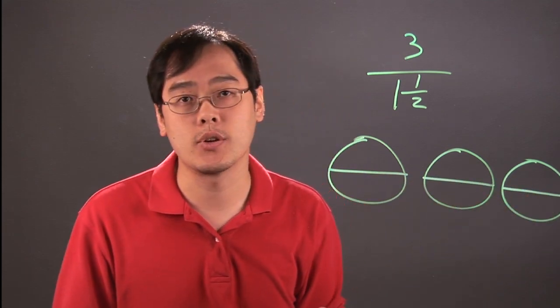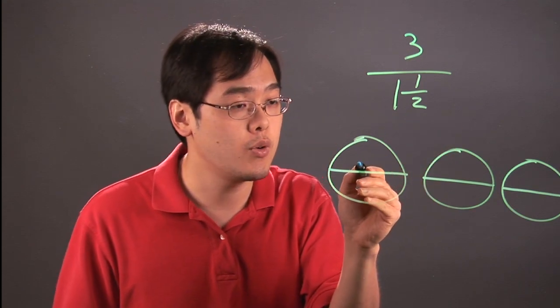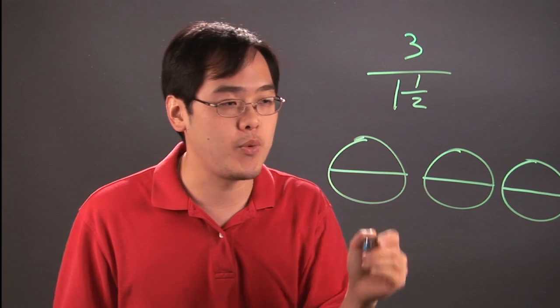So we have a lot of half circles and basically with one and a half you're talking about three halves. So basically we're going to section off each group of three halves.